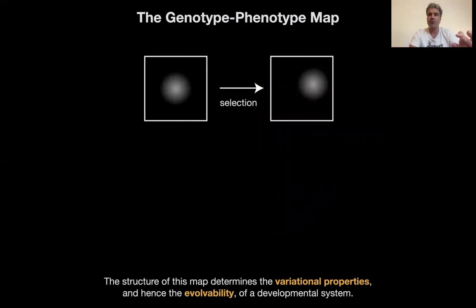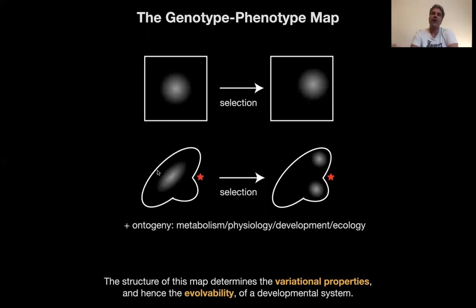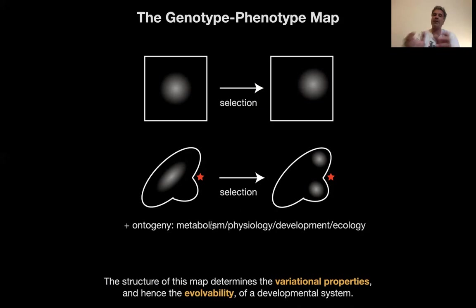What's really essential is that the structure of this map determines the variational properties and hence the evolvability of a developmental system. In a cartoonish way: in a naive version of population genetics, you have any kind of variation possible — an isotropic distribution of different phenotypes in phenotype space. Selection with an optimal phenotype moves the whole population there. But if you have an anisotropic shape and limitations to this distribution, the optimal phenotype may be outside of what development can generate. This is how the structure of the genotype-phenotype map plays together with natural selection to create evolutionary change.